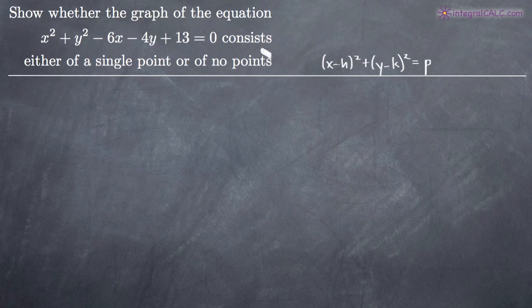Often times with these kinds of problems, the graph will either be a circle, a single point, or no points. In this case they've narrowed it down to either a single point or no points. What we need to do is get our equation into the form given in this formula, which is the formula for a circle. To do that, we need to complete the square with respect to both x and y.